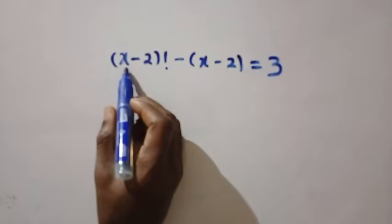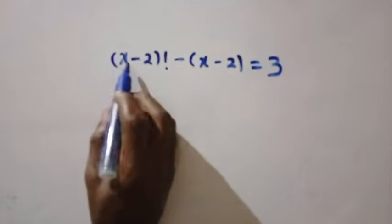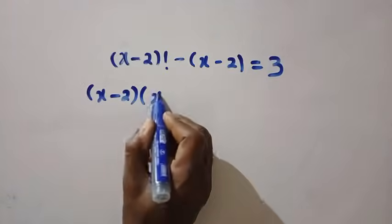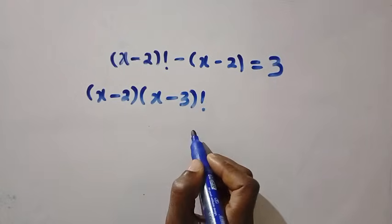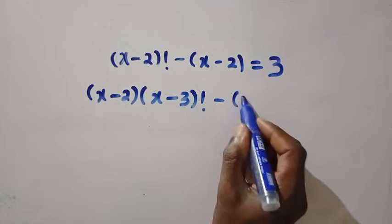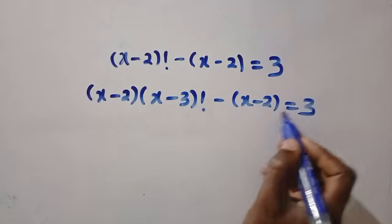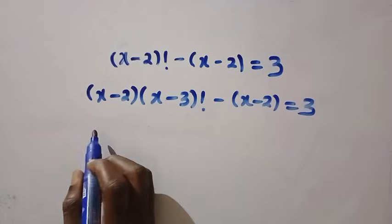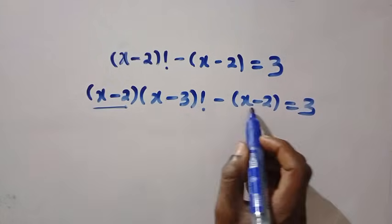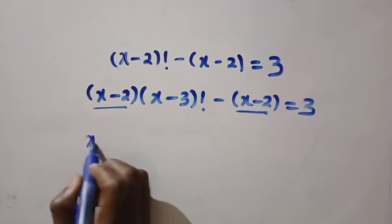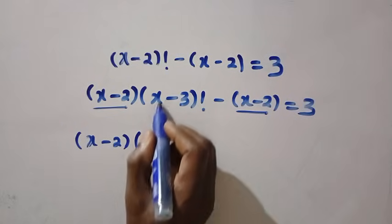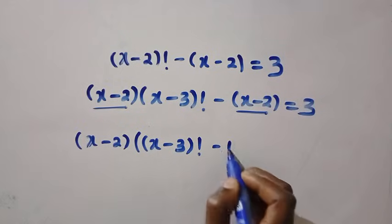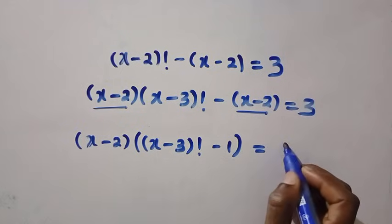And the next step, we are going to have x minus 2 factorial minus x minus 2 equals 3. Then, according to the factorial rules that we applied above, so here we change it to x minus 2. Then here is x minus 3 factorial minus open brackets, x minus 2 equals 3. And with this, we factor out x minus 2. So this is x minus 2, this is x minus 2, just like quadratic. Then we have x minus 2 bracket, here it means x minus 3 factorial, and this remains 1. Everything equals 3.